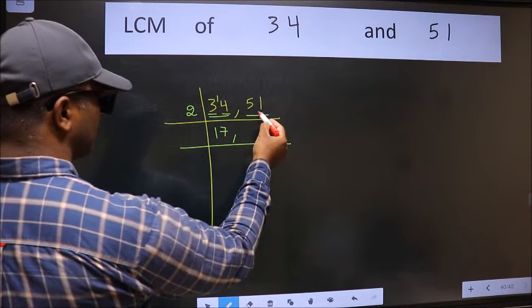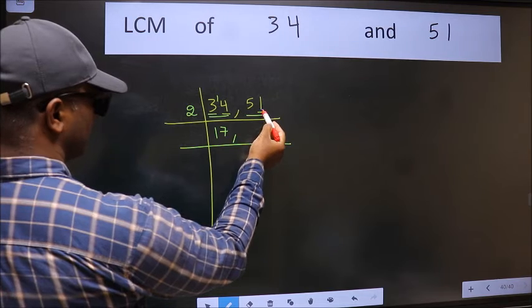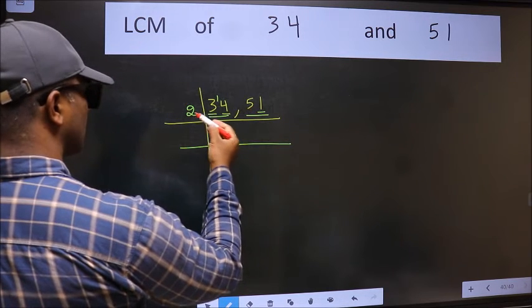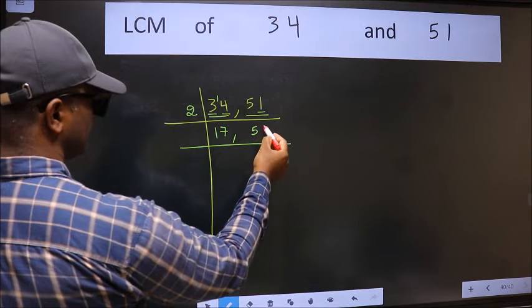The other number 51, last digit 1, not even. So this number is not divisible by 2, so you write it down as it is.